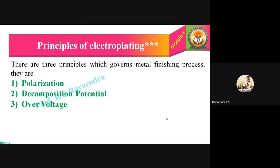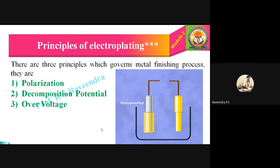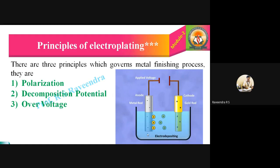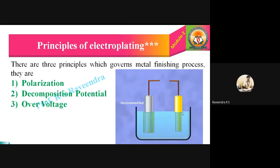Let us learn one by one, starting with polarization. Before explaining polarization, decomposition potential, and overvoltage, I would like to show this animated picture of electroplating which explains the actual principle. We can see here an electroplating tank in which gold solution is taken. This is a metal rod which acts as anode, and the gold rod acts as cathode.